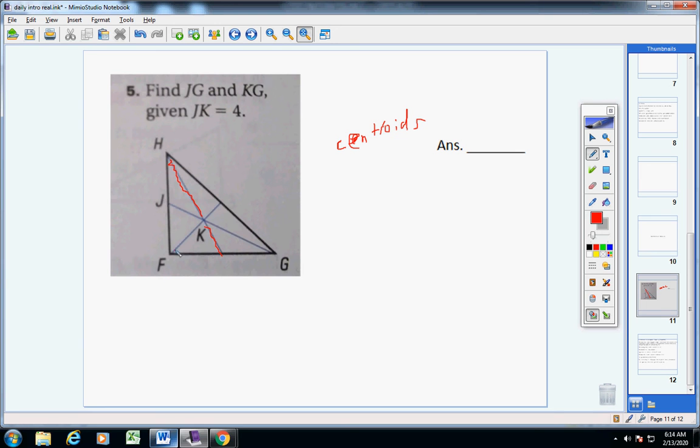Same thing here. The longer line here is twice as big as this line here. The longer line here is twice as big as this line here. So, with that in mind, I told you here that JK is four. So, from here to here is four. Think about what I just said. If this blue line is a centroid, which it is, then this longer segment here is twice as big as this. So, if this is four, then from here to here, it has to be what? Eight.